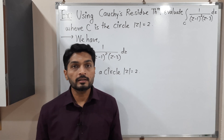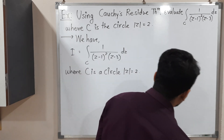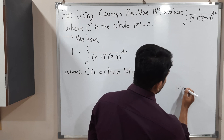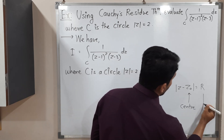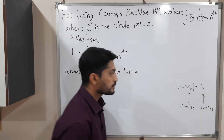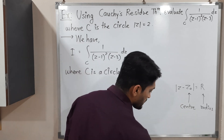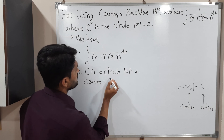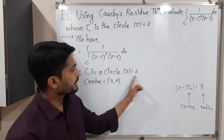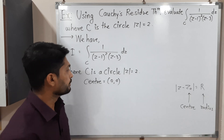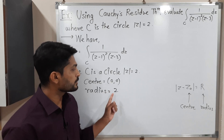To draw the circle, we need the center and radius. We can easily obtain these by comparing with the standard form. The standard form of a circle is mod(Z minus Z₀) equals R, where Z₀ is the center and R is the radius. Comparing, since only mod Z is present, Z₀ is 0, so the center is (0, 0). Comparing the right-hand side, R equals 2, so the radius is 2.